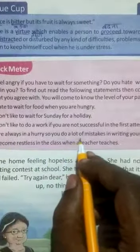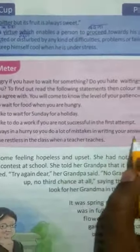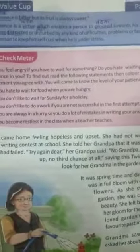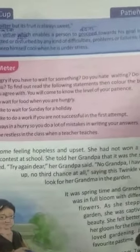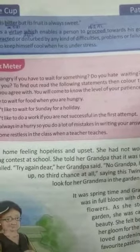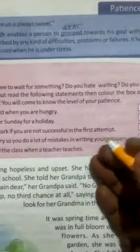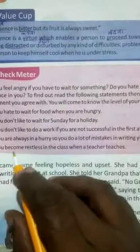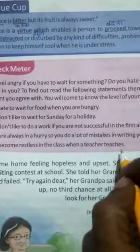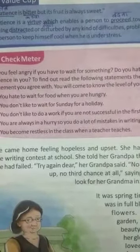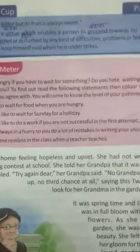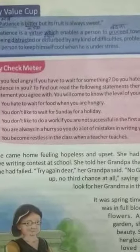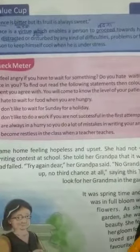Fourth statement: you are always in a hurry and make a lot of mistakes in writing your answers. This happens with many people — during exams we are in such a hurry to complete the paper that we make mistakes. Fifth statement: you become restless in class when the teacher teaches a subject you find boring. If you feel restless and can't control yourself, mark it.